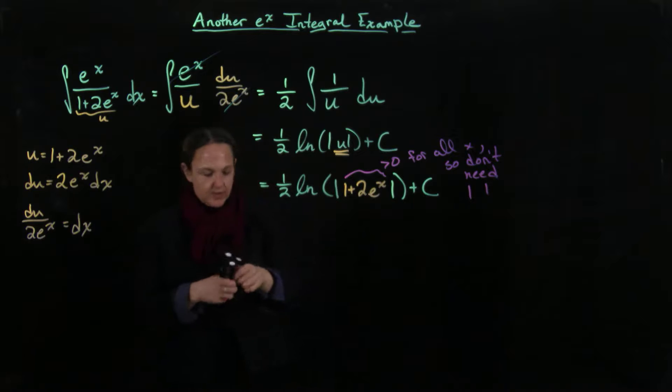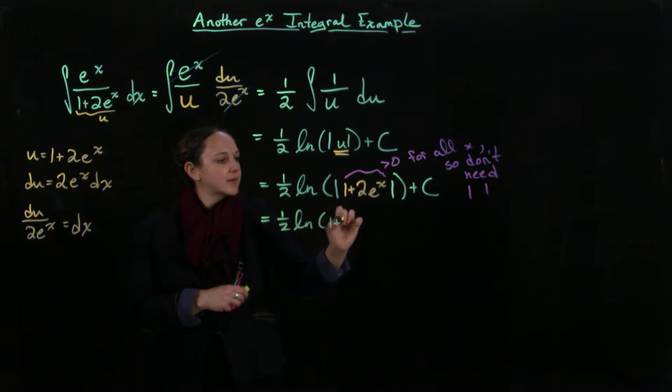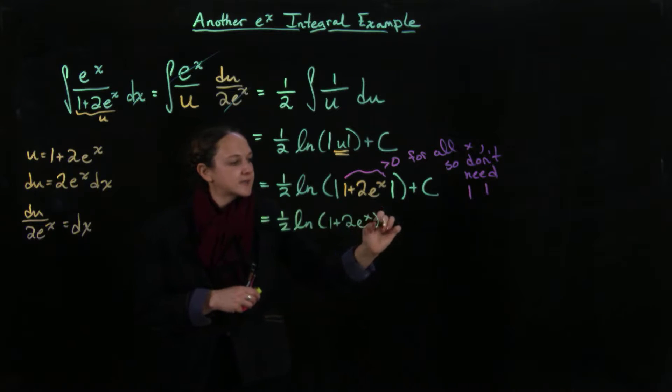So I could just go ahead and write this as 1 half times the natural log of 1 plus 2 e to the x plus c.